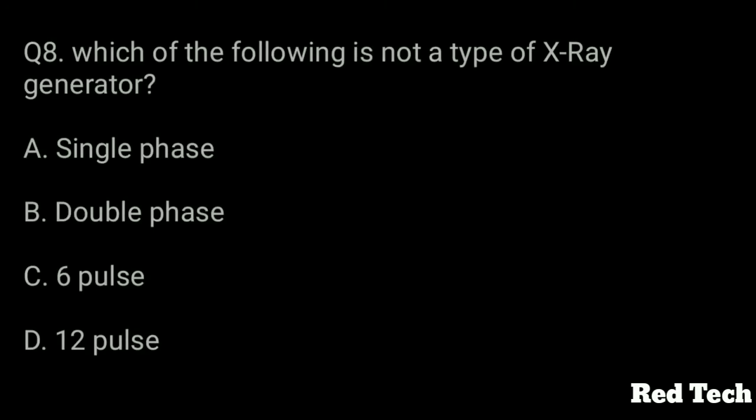Question number eight: Which of the following is not a type of X-ray generator? Options: single phase, double phase, six pulse, or twelve pulse. The right answer is double phase. Double phase generator is not a type of X-ray generator.